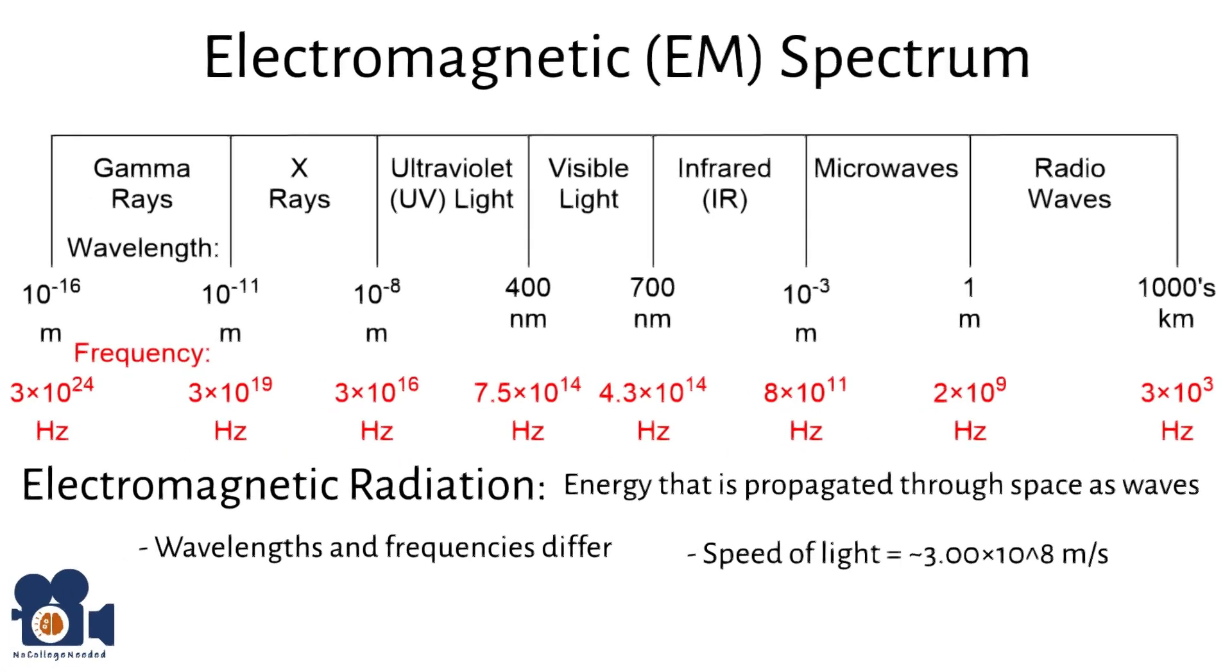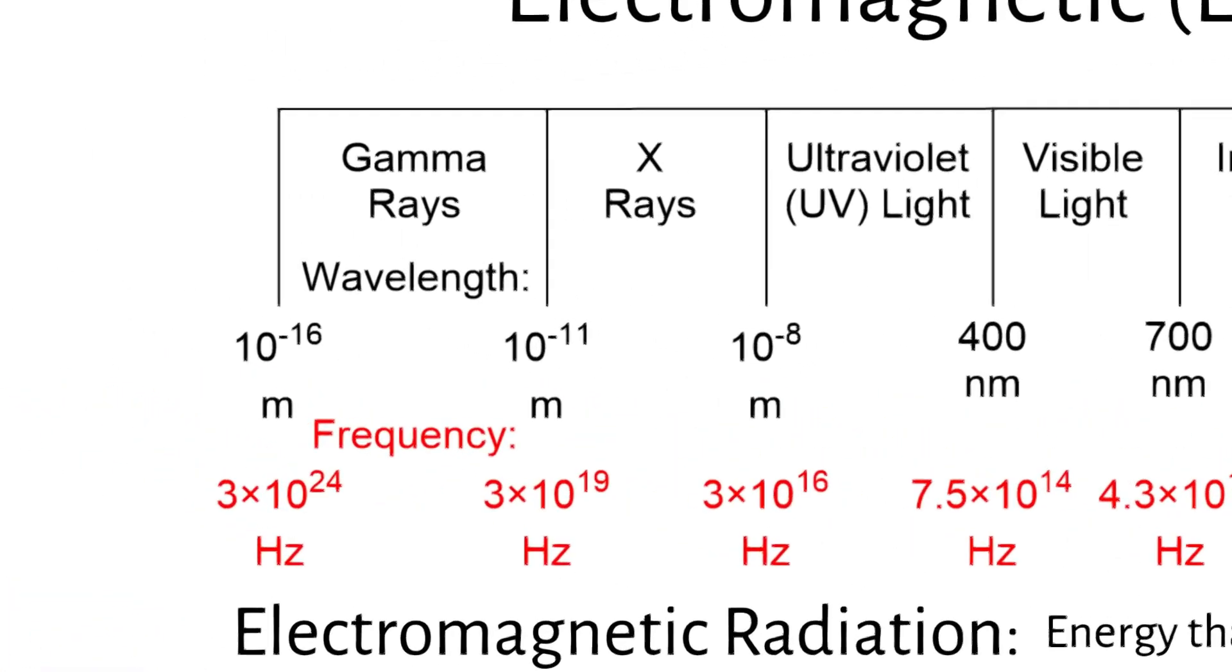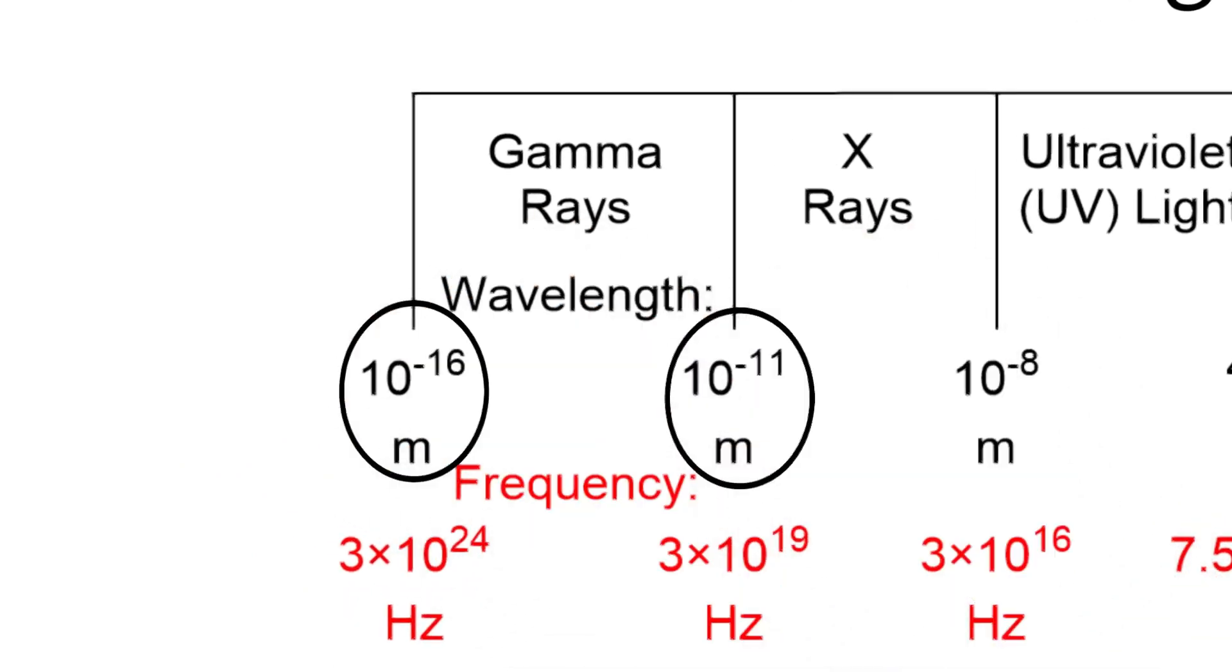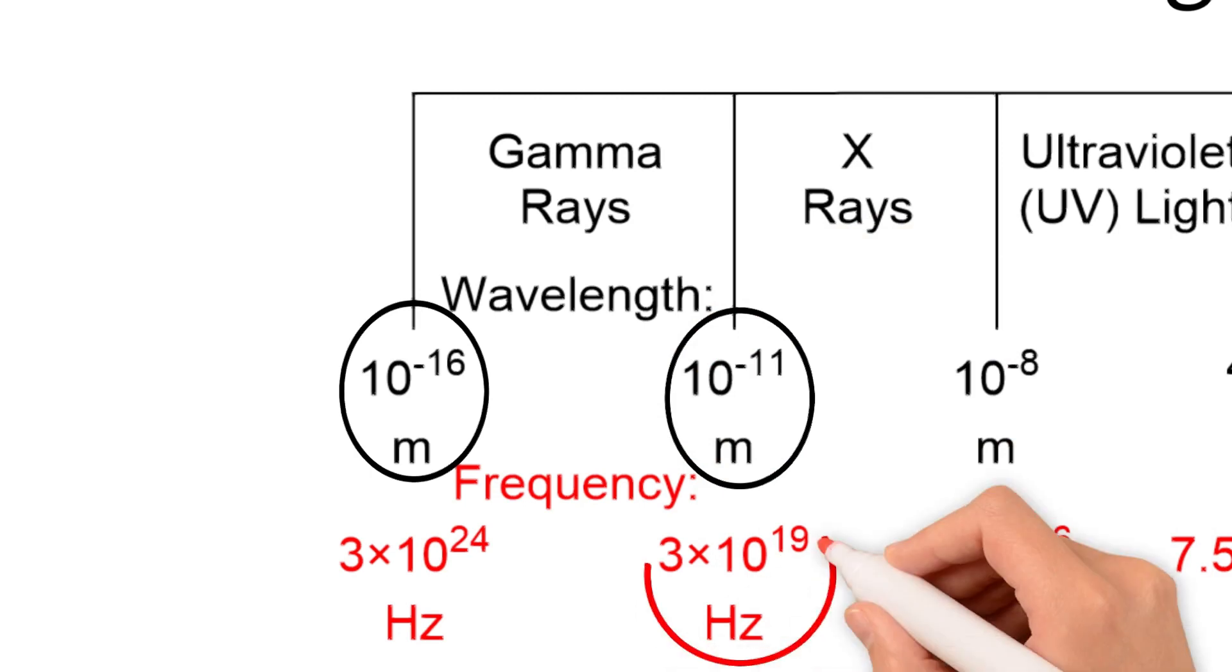The EM spectrum is a continuous range of wavelengths, but is commonly divided into several regions from shortest to longest. The first is gamma rays. With the shortest wavelengths, less than 10 picometers, and the highest frequencies, 10 to the 19th Hertz to 10 to the 24th Hertz, gamma rays can carry a significant amount of energy.